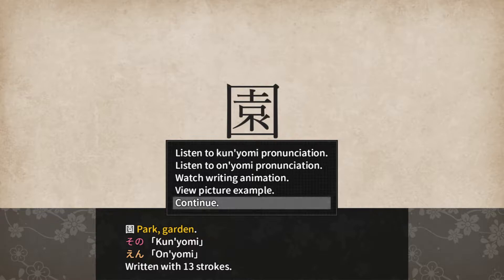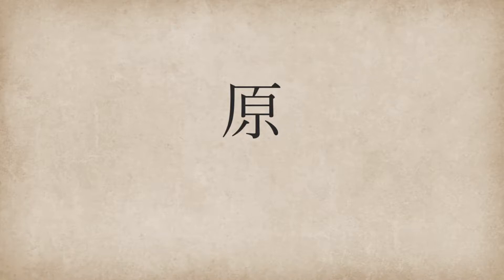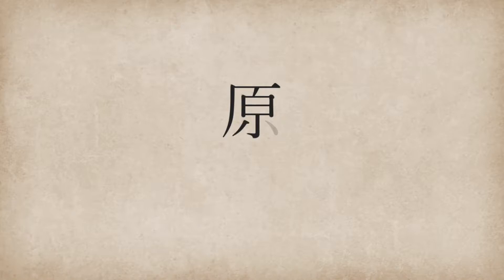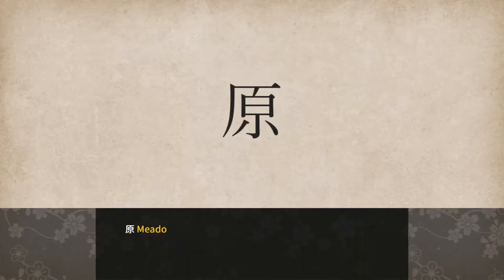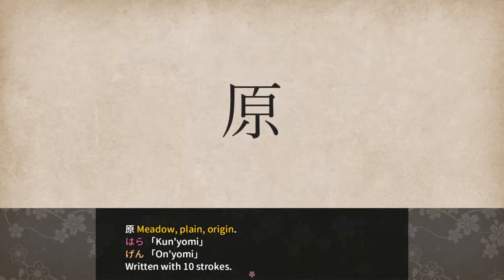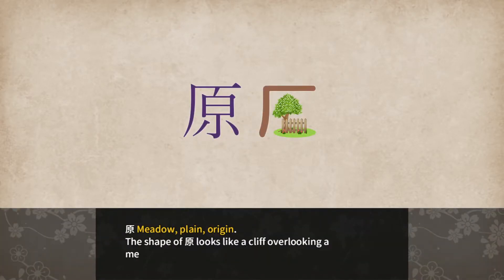That actually makes sense. 原 (hara/gen): meadow, plain, or origin — hara for kun'yomi or gen for on'yomi, written with 10 strokes. The shape of hara looks like a cliff overlooking a meadow or field.